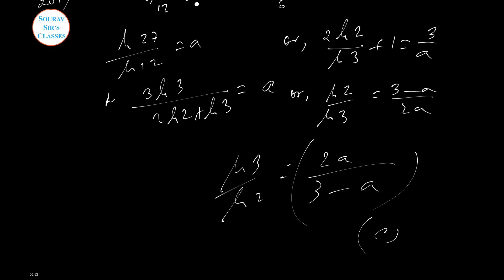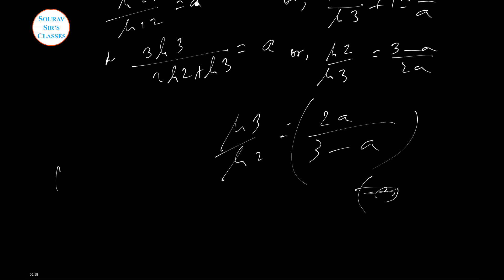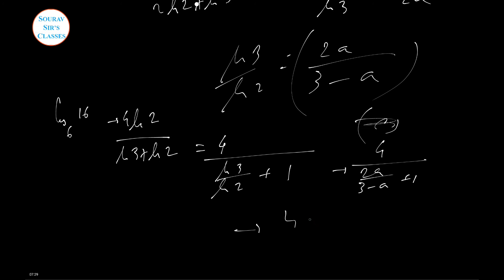Now they ask us to find log₆(16). This is log 16 / log 6 = 4 log 2 / (log 3 + log 2). Writing this as 4 divided by [(log 3 / log 2) + 1], we substitute the value: 4 / [2a/(3-a) + 1] = 4(3-a) / (2a + 3 - a) = 4(3-a) / (3+a). So option B is the correct option.